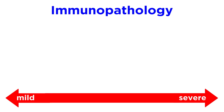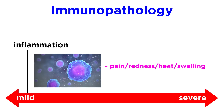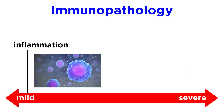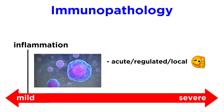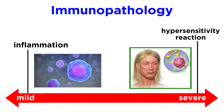On the milder end of the spectrum, we might see simple inflammation, which just refers to pain, redness, heat, and swelling, caused by cytokines that are released by immune system cells in response to the virus. Context is critical here, though. An acute, regulated, local case of inflammation is generally a good sign, while chronic, systemic inflammation is more destructive and worrisome. If the virus spreads, it might trigger a hypersensitivity reaction via our adaptive immune system, which can be absolutely devastating.